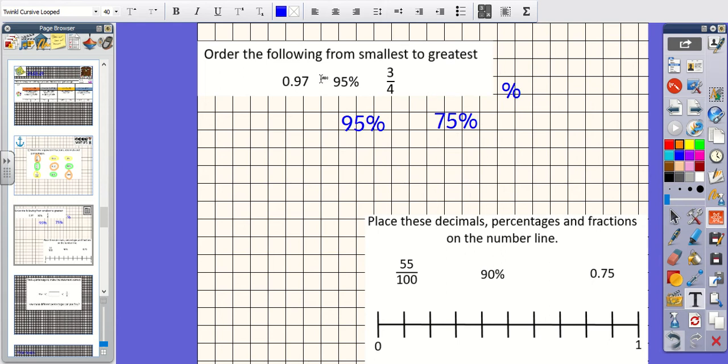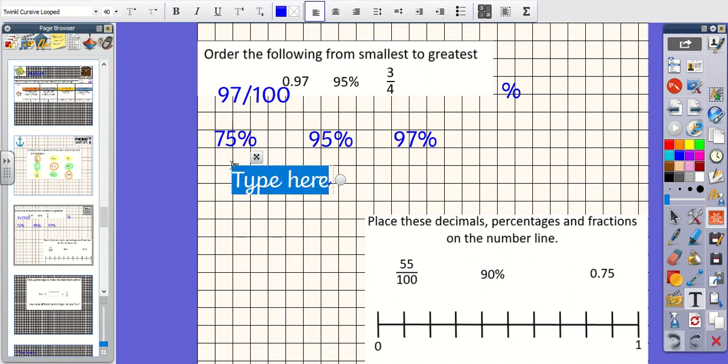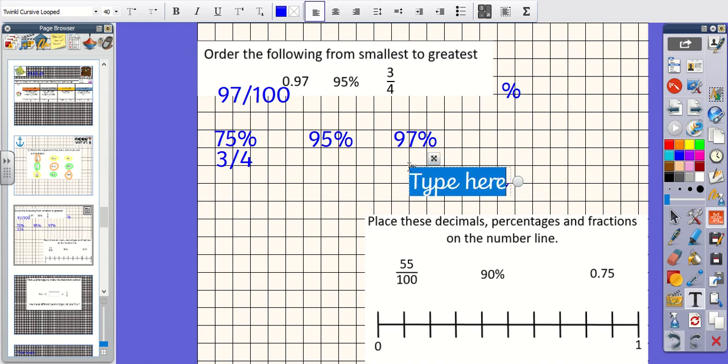So 0.97 as a fraction would be 97 hundredths. I need a percentage, so that's going to be 97%. So from smallest to greatest, I've got 75%, then 95%, and then 97%. Now because I didn't start out with all percentages, I now need to convert back. So 75% is in fact 3 quarters, 95% is the same, and then 97% was 0.97. So it would go 3 quarters, 95%, and 0.97.